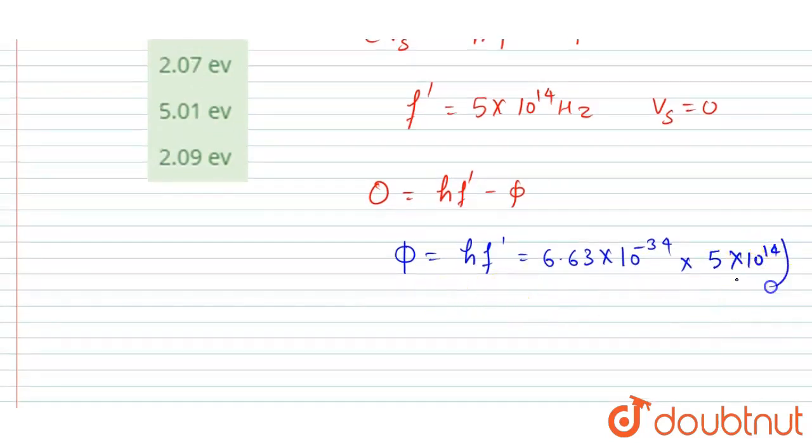So let's convert it into electron volt. So work function in electron volt will be, so if you multiply them you will get 3.15 into 10 to the power minus 20 joule divided by 1.6 into 10 to the power minus 19.